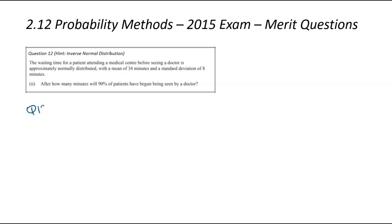So question number 12. I have given us a hint about the topic. Waiting time for a patient attending a medical center is approximately normally distributed. So you'll normally see that phrase in a normal distribution question. That'll give you a bit of reassurance. We've been told about the mean, and we've been told about the standard deviation.